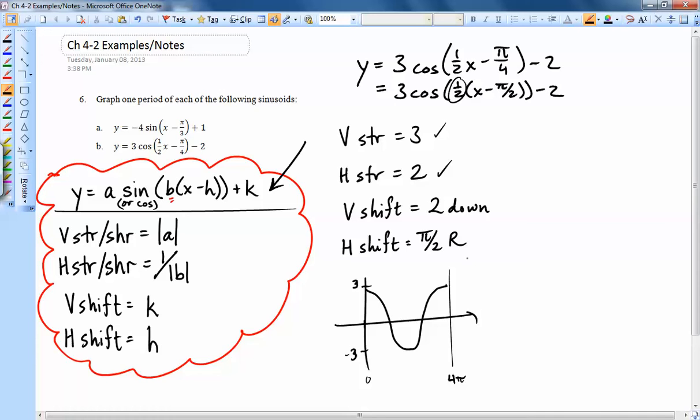Vertical shift down 2. So instead of 3 to negative 3, now I'm going to go down 2. So 3 minus 2 is 1, and negative 3 minus 2 is negative 5. And if I'm shifting to the right by π/2, I have to add π/2 to all my x values. So the 0 turns into π/2, and the 4π turns into 9π/2.